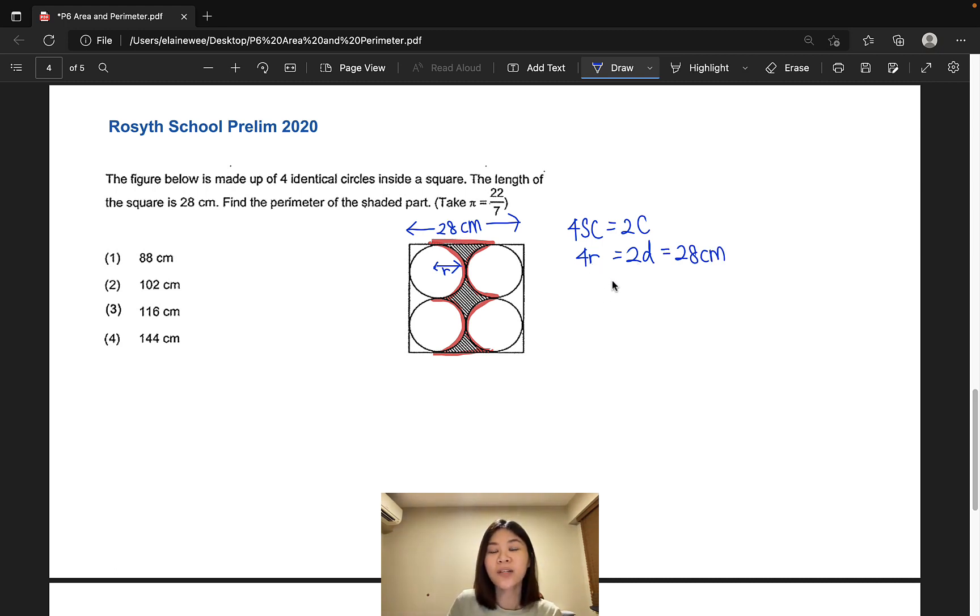So all we need to do now is to find the circumference of two full circles. Since two diameters make up 28 cm, one diameter would make up 14. So the circumference of two circles will be 2 times pi times 14. So doing some simple cancellations, that would give us 88 cm. All right, so all we need to do now is to add these two numbers together. And that would give us 116 cm.